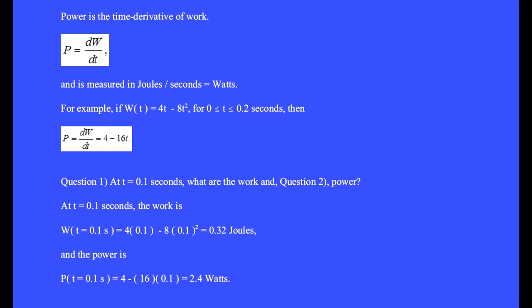Question 1: At t equal 0.1 seconds, what are the work and power? Putting t equal to 0.1 seconds, the work is W(0.1) = 4(0.1) - 8(0.1)² = 0.32 joules, and the power is P(0.1) = 4 - 16(0.1) = 2.4 watts.